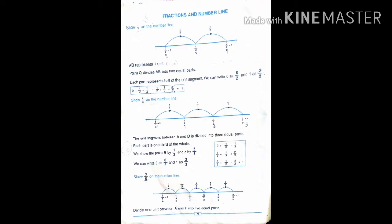So we already have the denominator value. The denominator value is 2. Q is the center point, and it is denoted as 1 by 2. Each part represents half of the unit segment. All parts — how many parts are separated? 1 by 2, 1 by 2, 1 by 2.